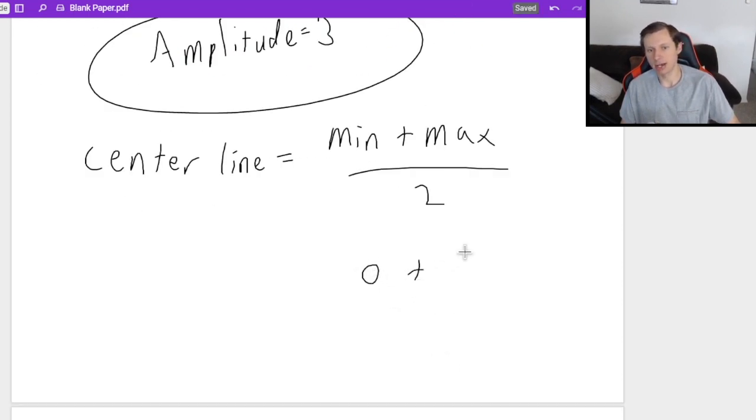So in this example, the minimum was zero, the max was six divided by two, your center line is at three. And remember why that's important because the amplitude is always measured as higher and lower from the center line.